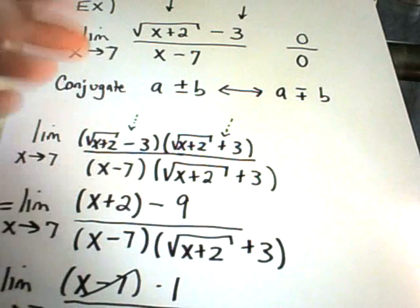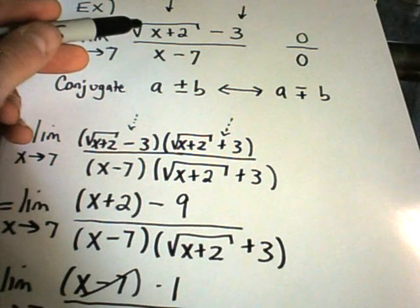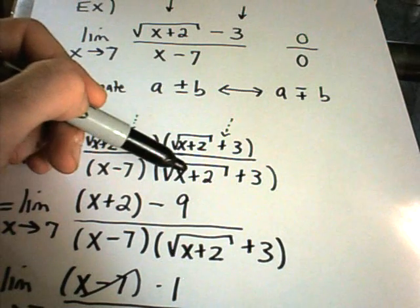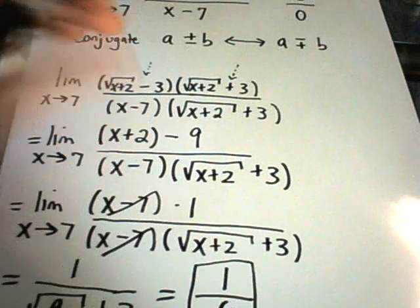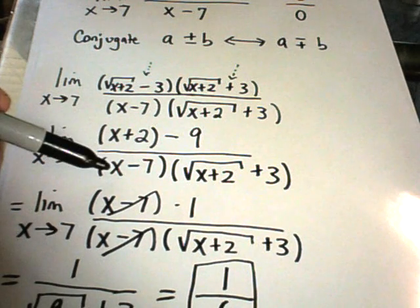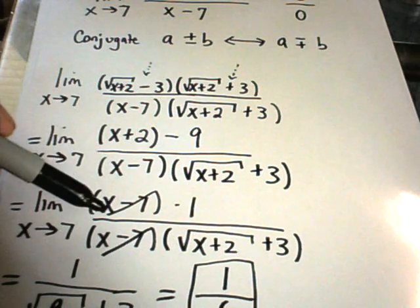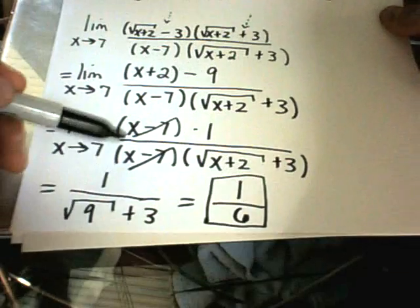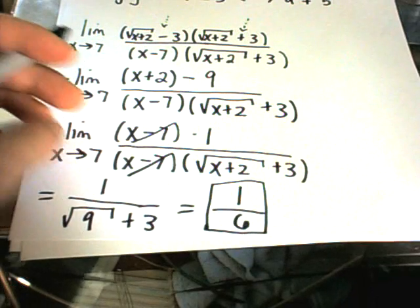So when you see radicals at the beginning of a problem, try multiplying by the conjugate. If you do it to the top, you've got to do it to the bottom. Simplify out the part where there is the conjugate. Leave the other part alone, because you should have something that will cancel out for you, just like the x - 7 did in this case. Thank you.